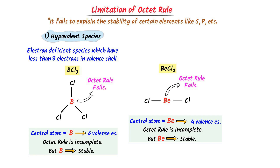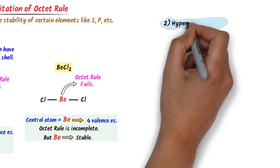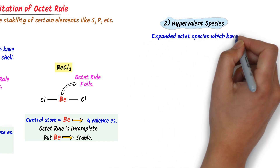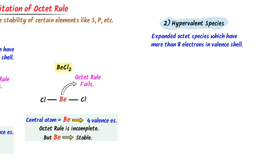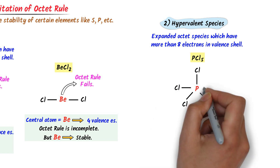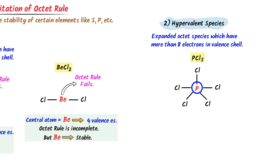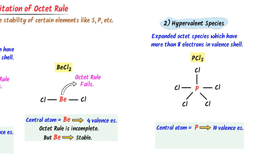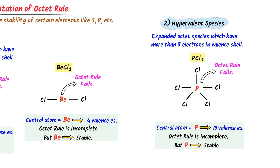The second limitation of the octet rule is hypervalent species. By hypervalent species I mean expanded octet species which have more than eight electrons in the valence shell. For instance, consider the PCl₅ molecule. Phosphorus is bonded to five chlorine atoms with no lone pair on phosphorus. The central atom phosphorus has 10 electrons — more than eight — and does not follow the octet rule, but this hypervalent species is still stable. This is a limitation of the octet rule which cannot explain the stability of PCl₅.